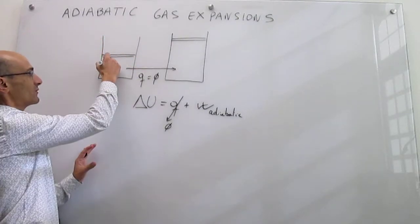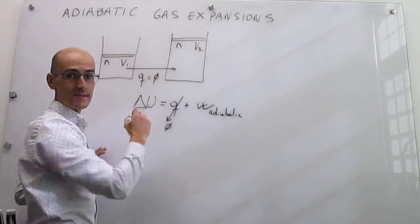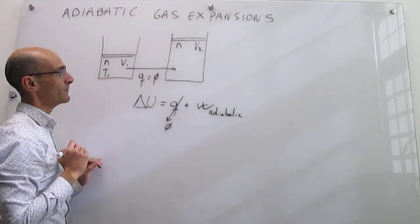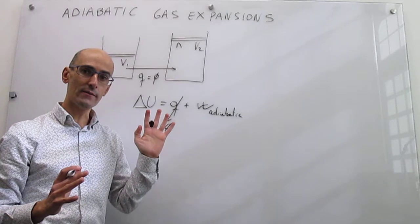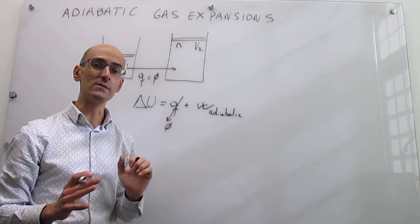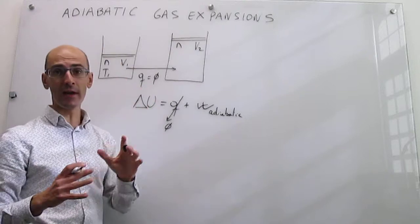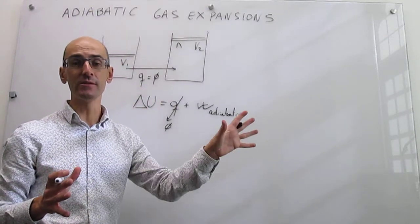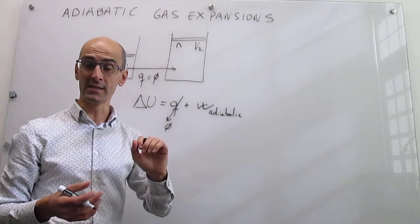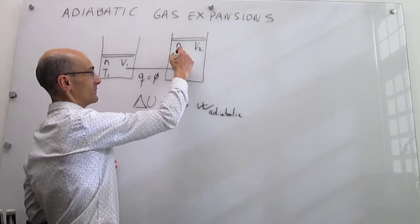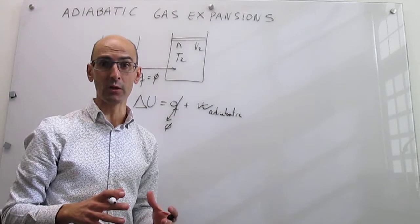These are closed systems so the number of moles does not change. The volume increases — this is an expansion — and the temperature starts at T1. Energy is leaving the system because the piston is pushing out and losing energy as work. Since no energy transfer as heat is allowed into the system, the gas cools down. The final temperature will actually be lower than the initial temperature — that is a hallmark of adiabatic expansions.